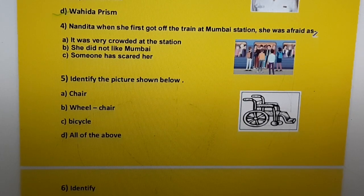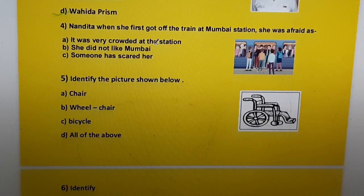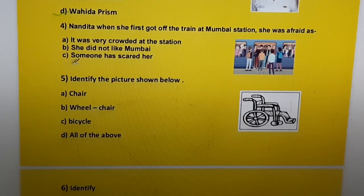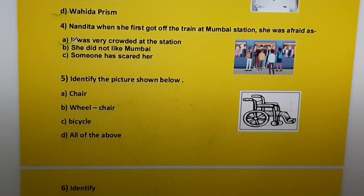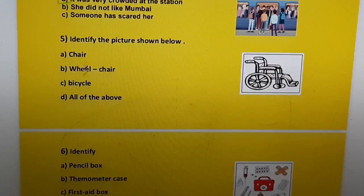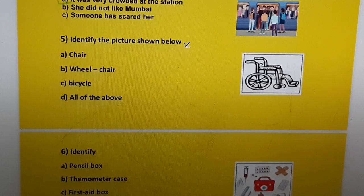Question four: When Nandita first got off the train at Mumbai station, she was afraid because — a) it was very crowded at the station, b) she did not like Mumbai, c) someone had scared her. The correct answer is a) it was very crowded at the station.